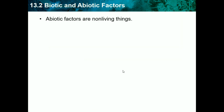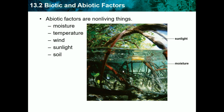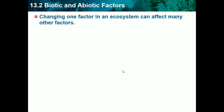Abiotic factors are non-living things — anything that doesn't breathe or live. Examples include moisture, temperature, wind, sunlight, and soil — basically anything that's not biotic, like air or rock. Changing one factor in an ecosystem can affect many other things. Since things interact in an ecosystem, the absence of one factor or a change in one will easily affect many others.